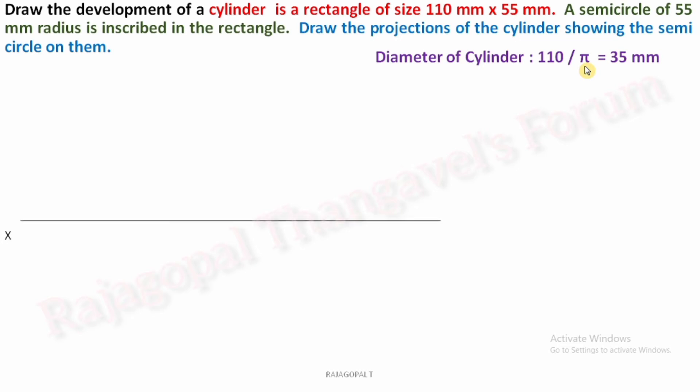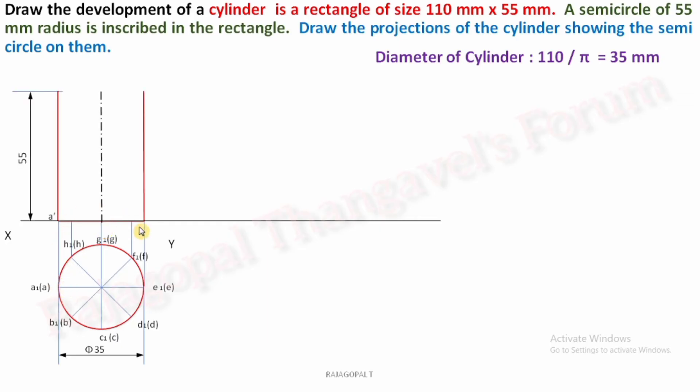With this we can draw a circle with a diameter of 35 mm and we can easily complete the top view. Okay, so diameter is 35 mm and divide this circle into 8 divisions and give a notation as per your convenience. Being a cylinder, one circle at the top face, another one at the base.